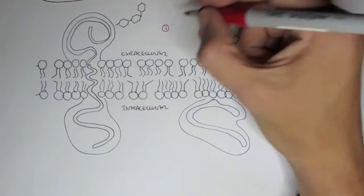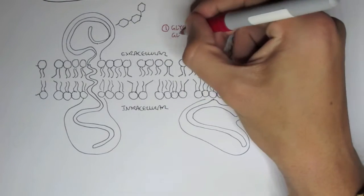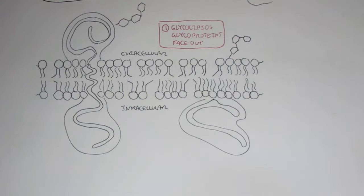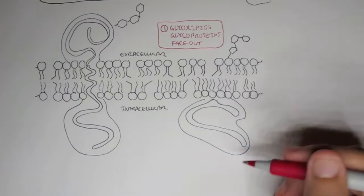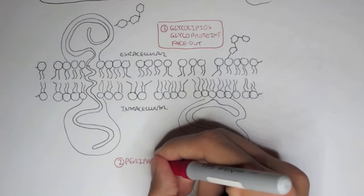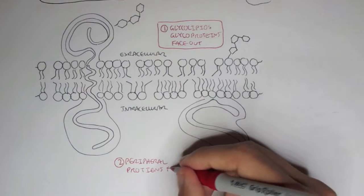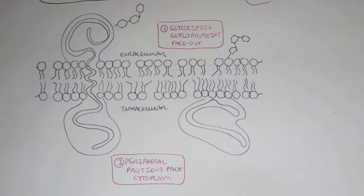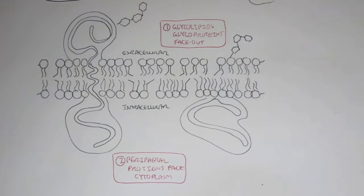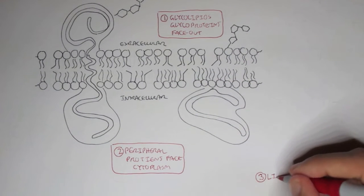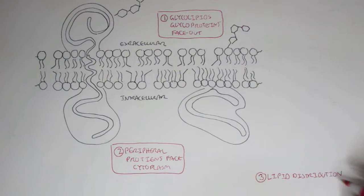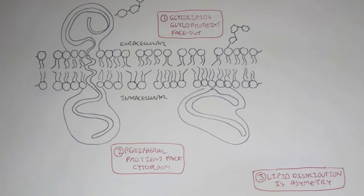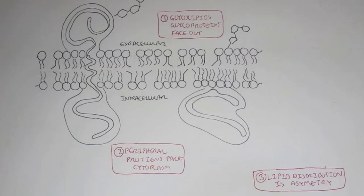Let's step away from the saturated unsaturated fatty acids and now look at the structures of lipid membrane bilayer. One important thing is that glycolipids and glycoproteins always face out, facing the extracellular fluid. Two, the peripheral proteins always face the cytoplasm usually. And three, the lipid distribution is asymmetry, so asymmetrical. There's different distribution of the different types of lipids on the first layer, the top layer, and the bottom layer.